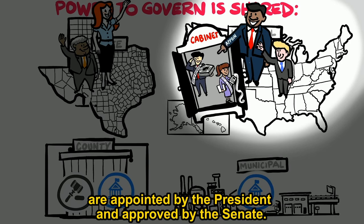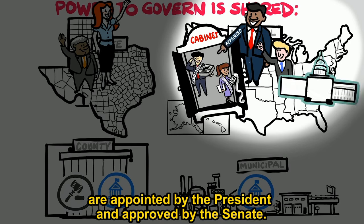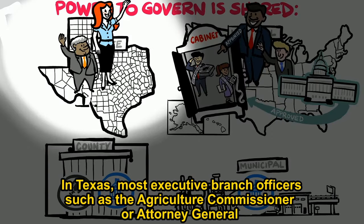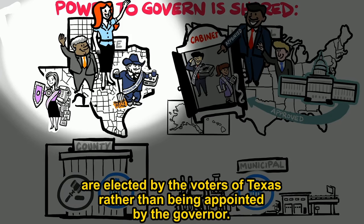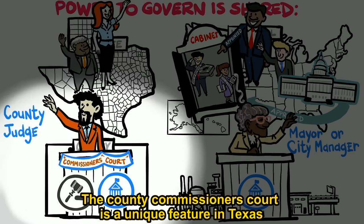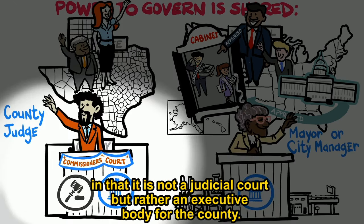are appointed by the president and approved by the Senate. In Texas, most executive branch officers, such as the agriculture commissioner or attorney general, are elected by the voters of Texas rather than being appointed by the governor. The county commissioner's court is a unique feature in Texas in that it is not a judicial court, but rather an executive body for the county.